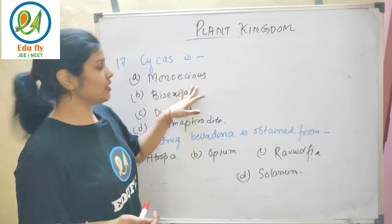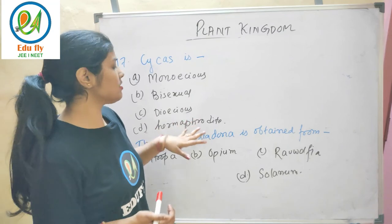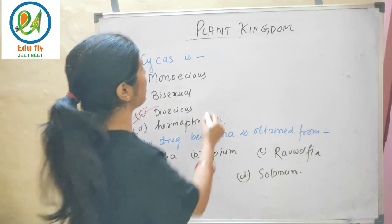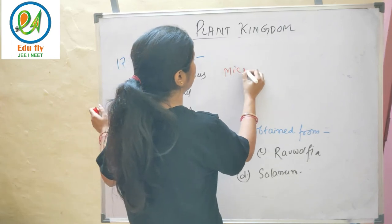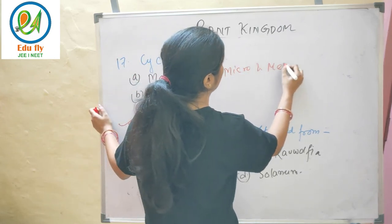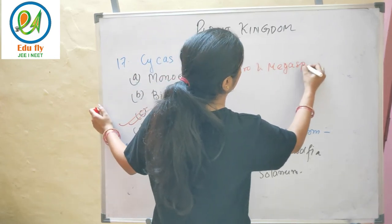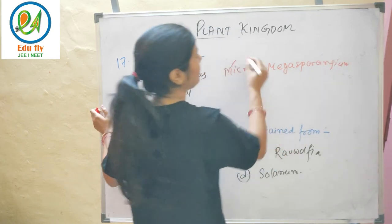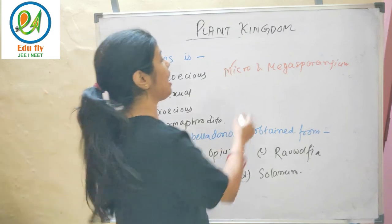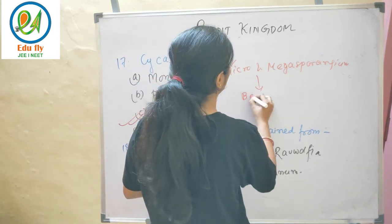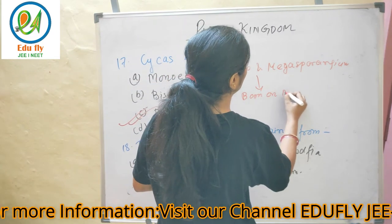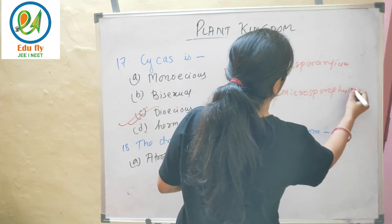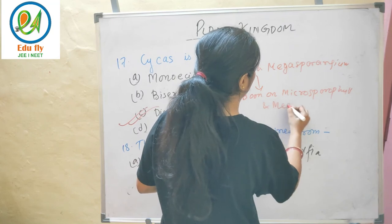Cycas is dioecious. It has microsporangia bearing male microspores and megasporangia bearing female megaspores. These are borne on microsporophylls and megasporophylls respectively.